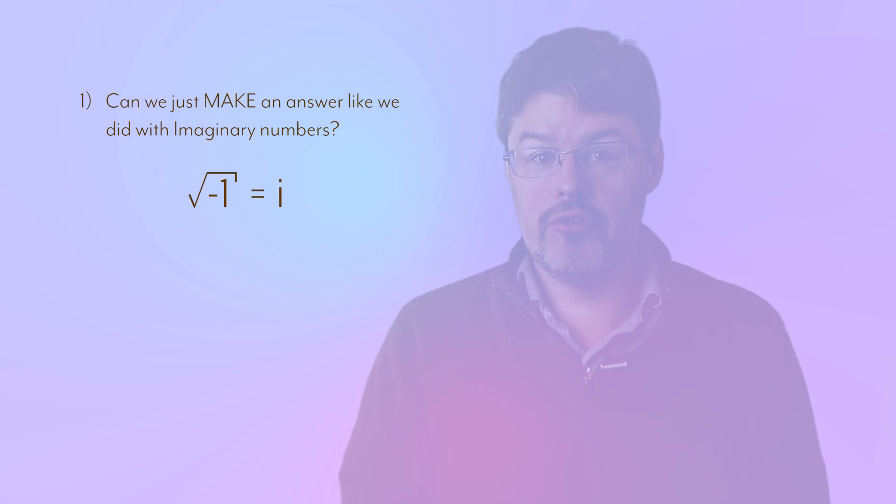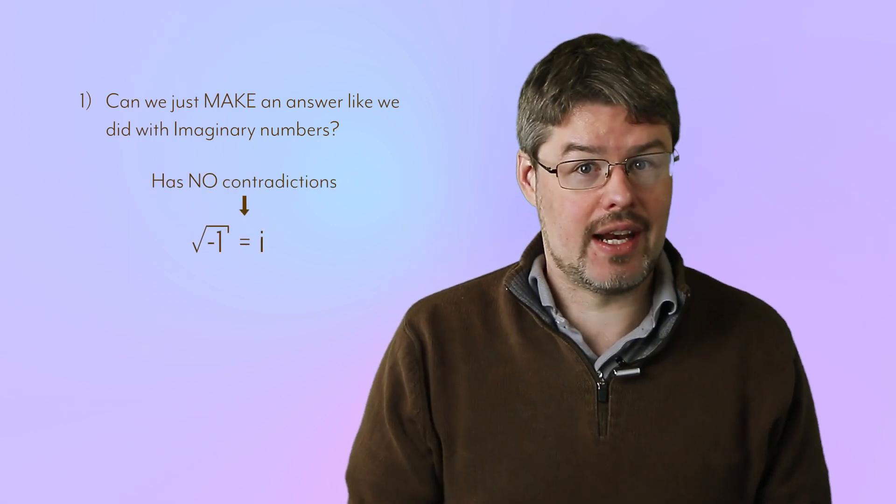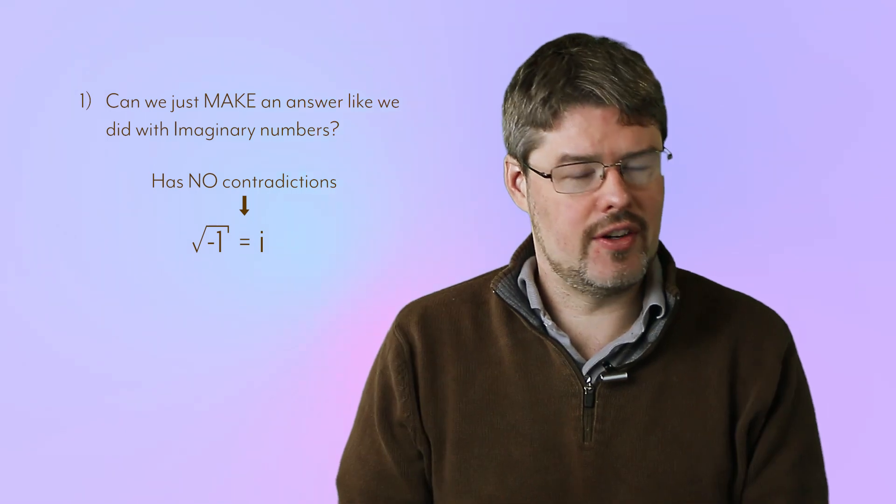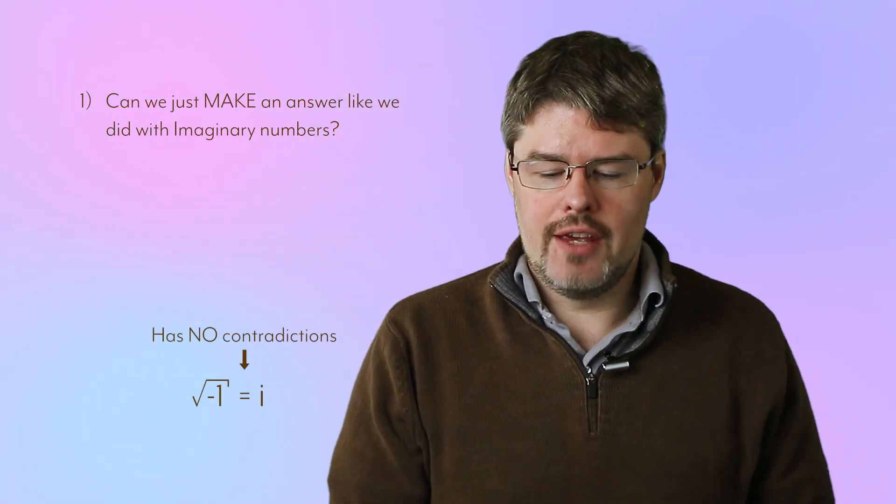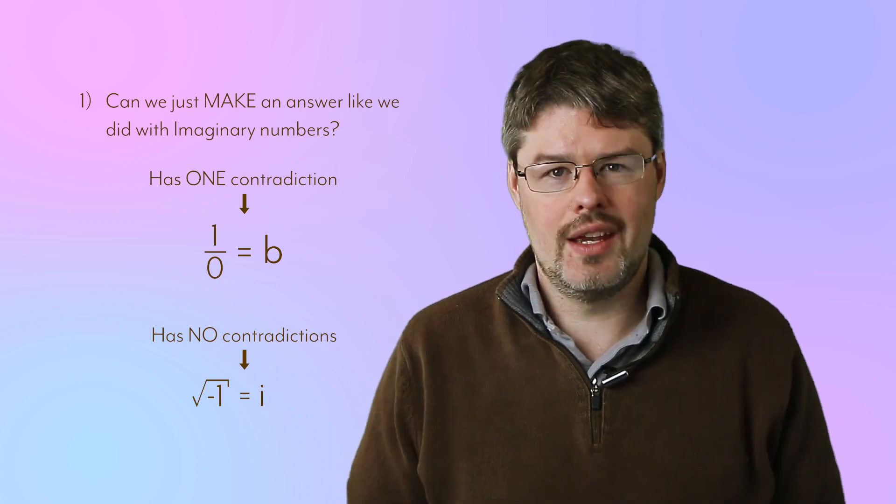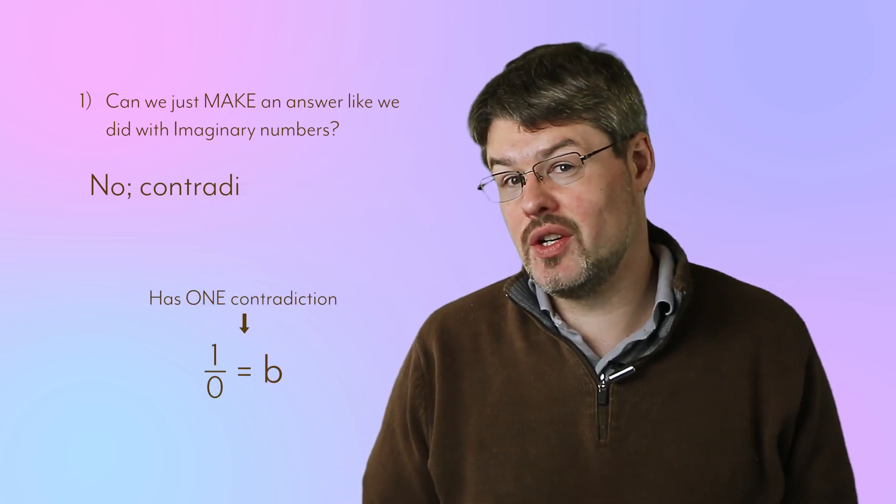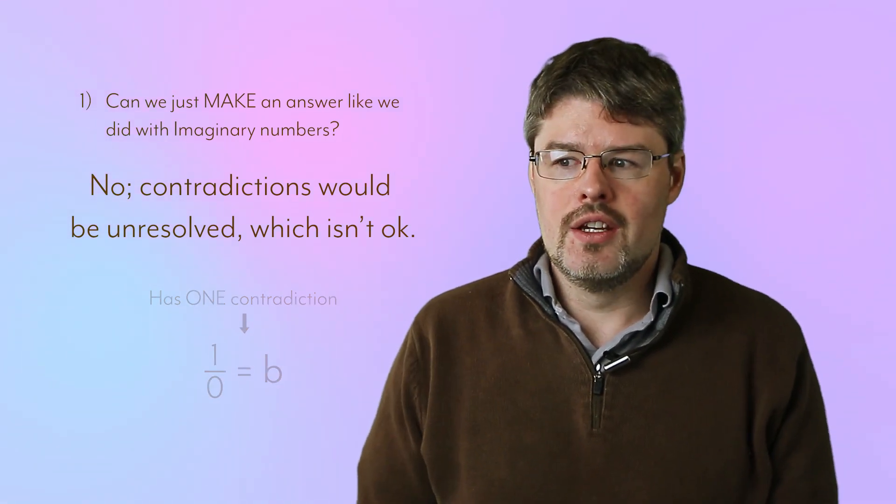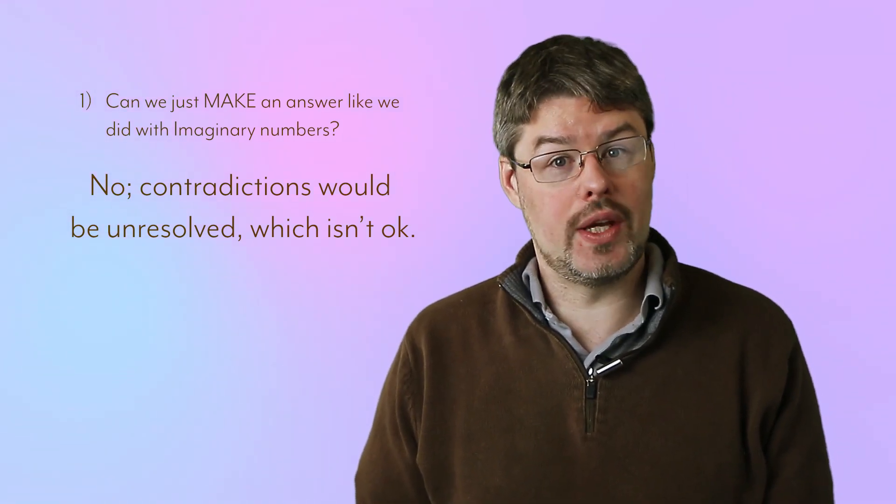But here's the difference. There were no fundamental axioms of mathematics that we were breaking by writing down the square root of negative one. That's different than in this case. Here, if we have one over zero, we actually get to a contradiction. And that's kind of going to be a recurring theme as we try to invent something to take care of this non-zero over zero case. That contradiction really is hard to get away from.